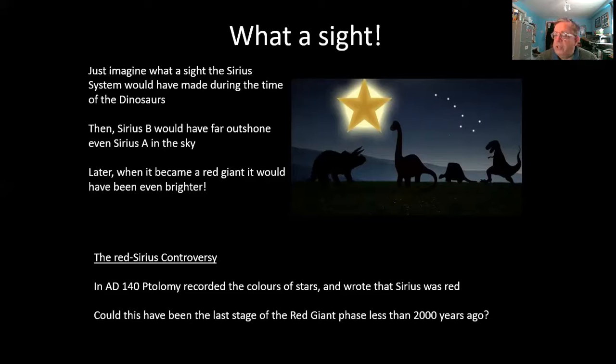But there is a slight controversy about this because only in the year AD 140, Ptolemy recorded the colors of the stars and he wrote down that Sirius was red in color. Now it's quite curious. Could this have been the last stage of the red giant phase less than 2,000 years ago? Seems unlikely. We think it would have been 100 million years ago that Sirius was going through the red giant phase. But perhaps this was when the last remains of the outflow from the star, creating the planetary nebula, would have been seen. Maybe there was a glowing gas smoke ring around it as the atmosphere of the star was driven away for the last time.